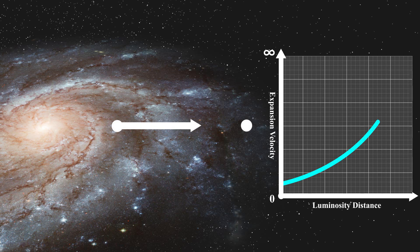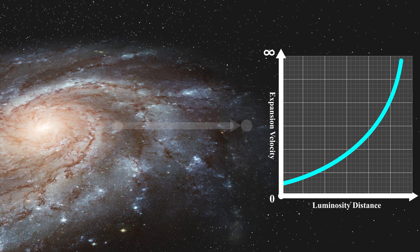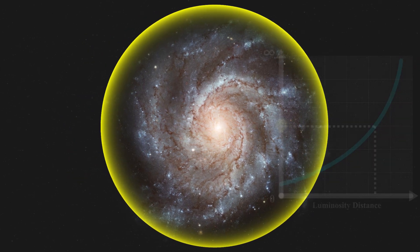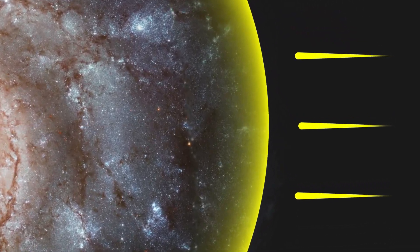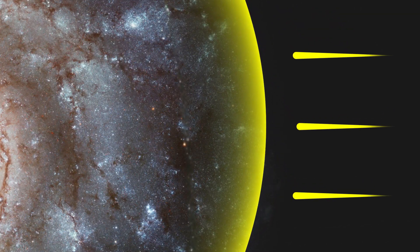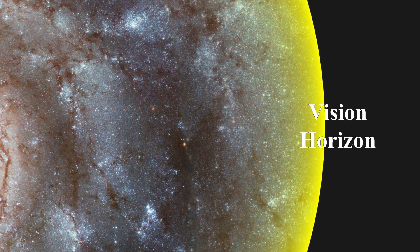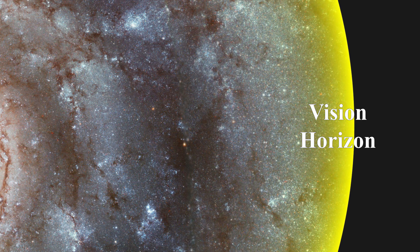As the distance between two points increases, so does the rate at which the universe expands. Thus, there exists a particular distance at which the expansion velocity of the universe equals the speed of light. Beyond this distance, light can never reach us because its propagation speed is slower than the expansion of the universe. This boundary is known as the vision horizon, representing the farthest observable extent of the universe from our perspective.